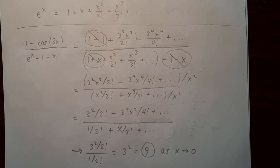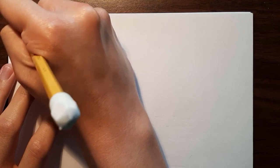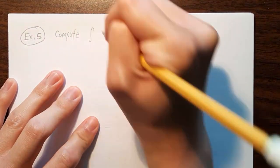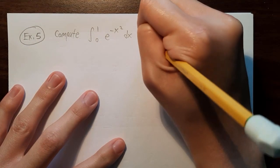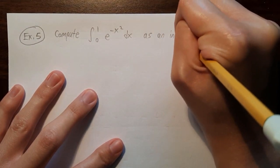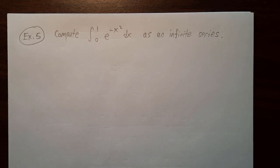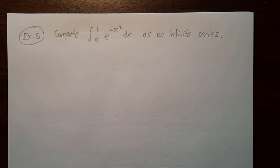Now let's go to another example. This time it's a definite integral. Example 5: compute the integral from 0 to 1 of e to the minus x squared dx, but as an infinite series. This is a classic example of an integrand for which you cannot find an antiderivative in terms of ordinary functions — you cannot write the antiderivative of e^(−x²) using plus, minus, times, divide, powers, roots, sine, cosine, ln, or any of those.